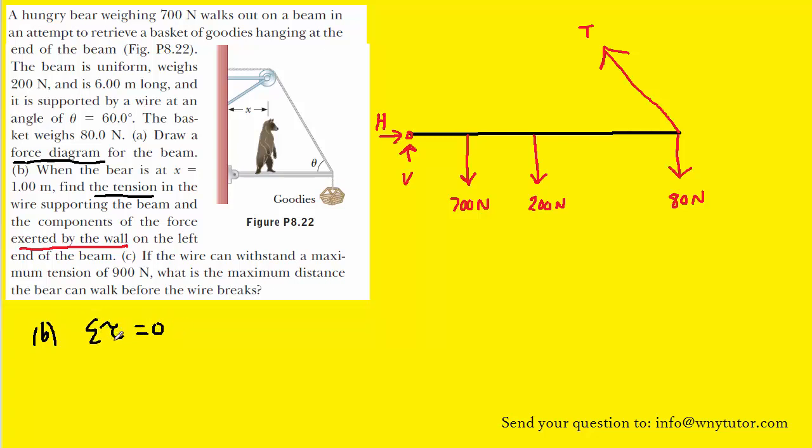Now this basically applies when an object is not rotating. And so certainly the beam here is not rotating, so therefore the sum of the torques will equal zero.